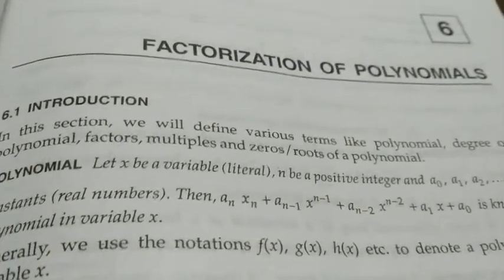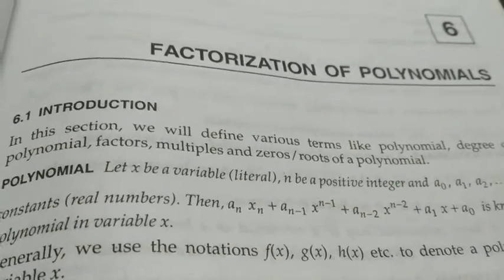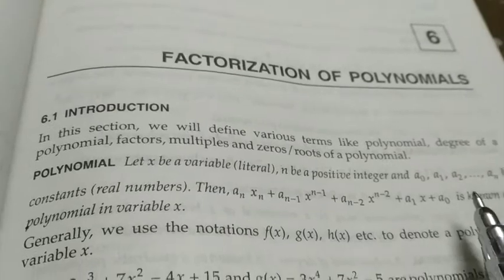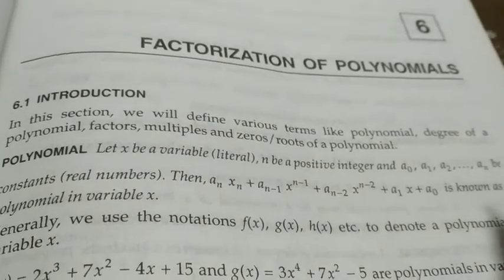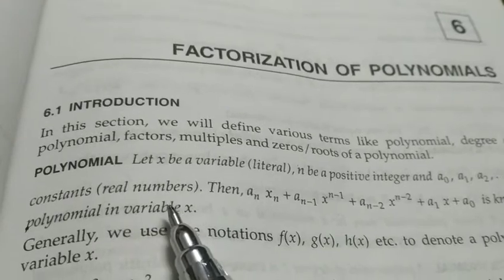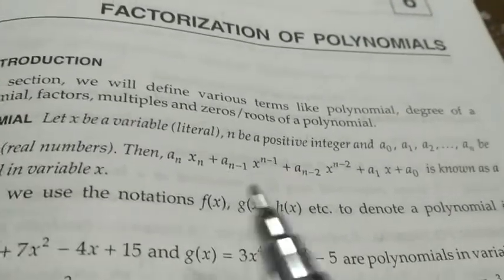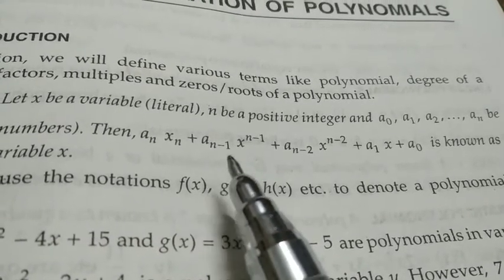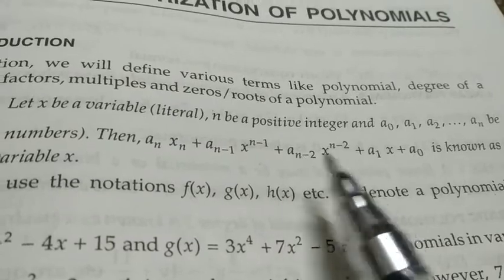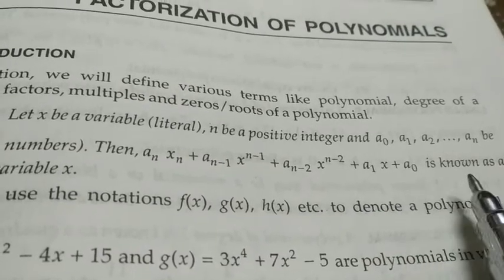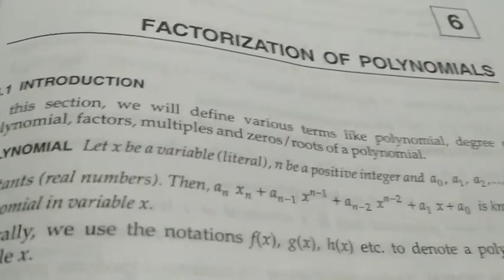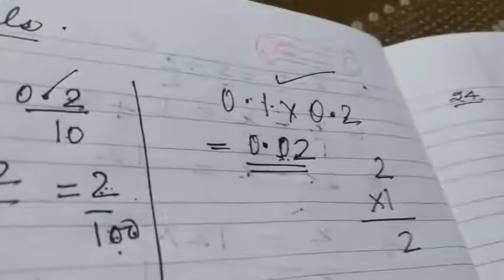Let x be any variable and n be any positive integer, and a₀, a₁, a₂, ... aₙ are constants which are real numbers. Then any expression in the form of aₙxⁿ + aₙ₋₁xⁿ⁻¹ + ... + a₀ is known as a polynomial in variable x.